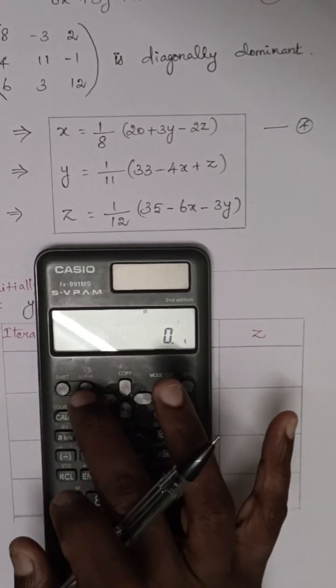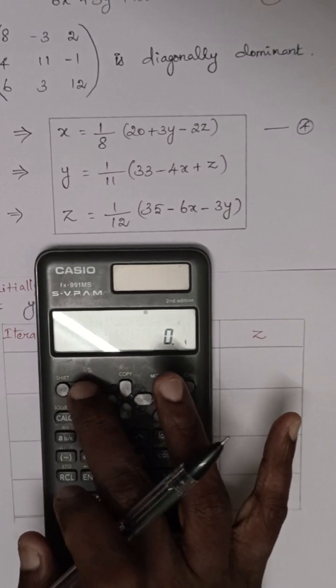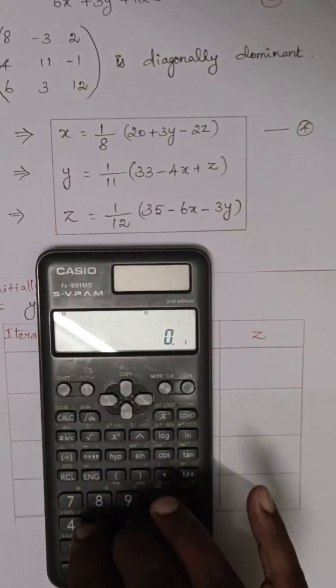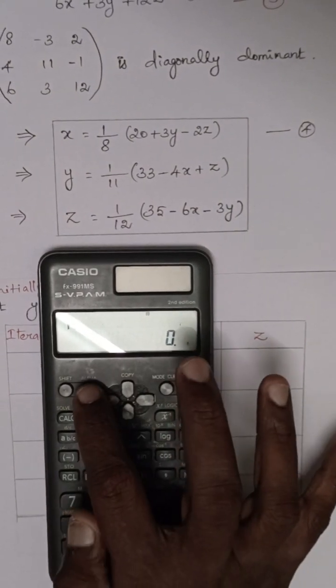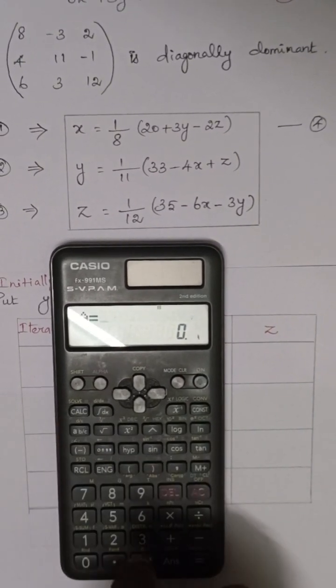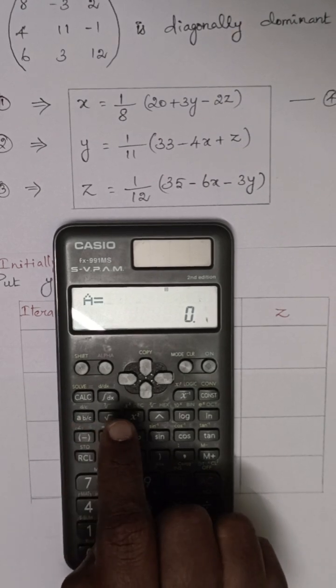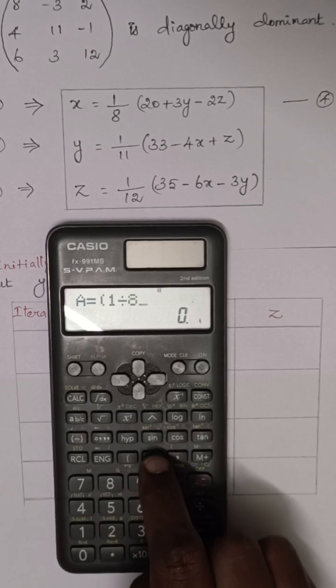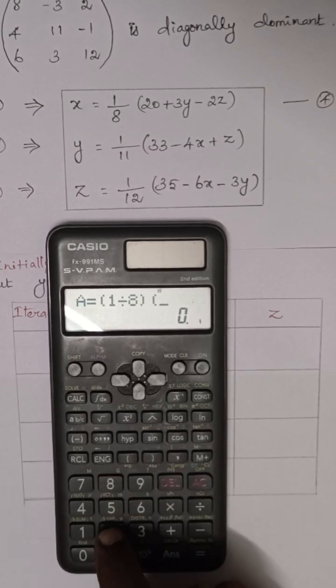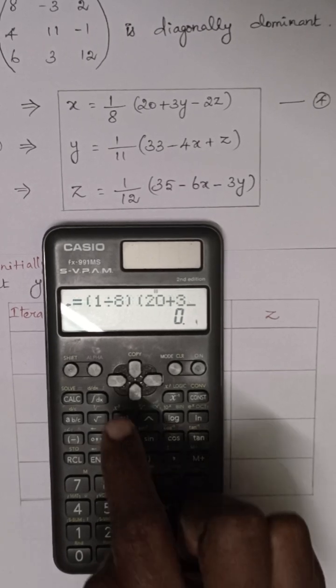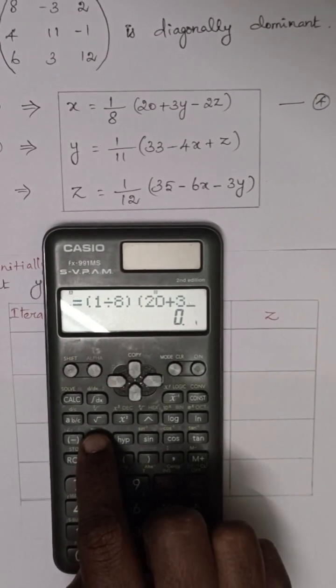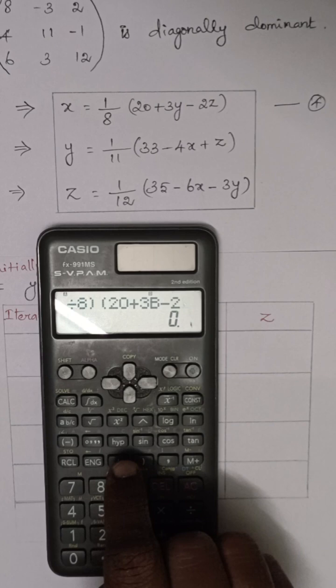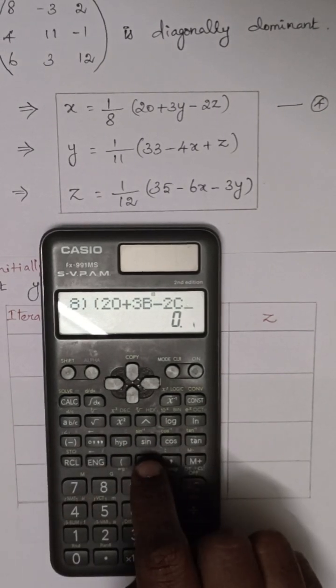See here, alpha. Use the pink button. Alpha a equals - calc button click - 1 by 8 means open the bracket, 1 divided by 8, close the bracket, and again open 20 plus 3 times b minus 2 times alpha c. First equation is fed.